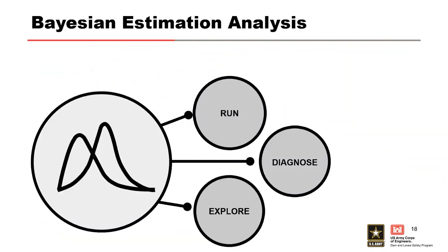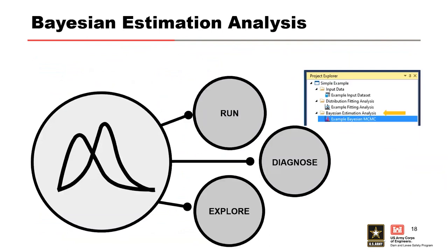Now let's move on to the third project element, and that's the Bayesian estimation. The reality is this is the heart of the software and what really separates Best Fit as the ideal software for flood hazards and risk assessments. Best Fit performs a Bayesian estimation using an efficient Markov chain Monte Carlo MCMC algorithm to estimate the distribution parameters given the input data. Let's look at that project element here.